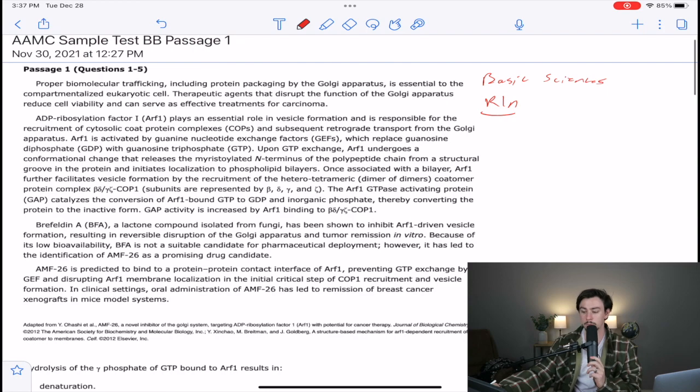So it begins, it says proper biomolecular trafficking, including protein packaging by the Golgi apparatus. That's a basic science - the Golgi apparatus packs up proteins that are destined for secretion, essentially, and it kind of labels them as such. It's like the post office. This is essential to the compartmentalized eukaryotic cell. Therapeutic agents that disrupt the function of the Golgi apparatus reduce cell viability and can serve as effective treatments for carcinoma.